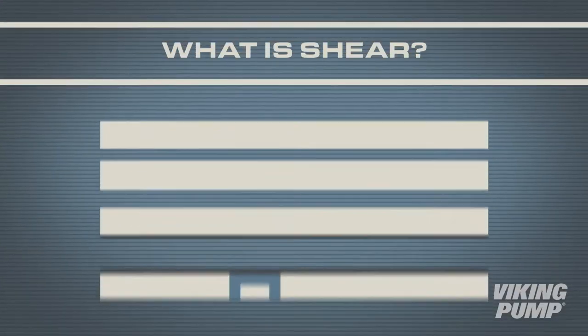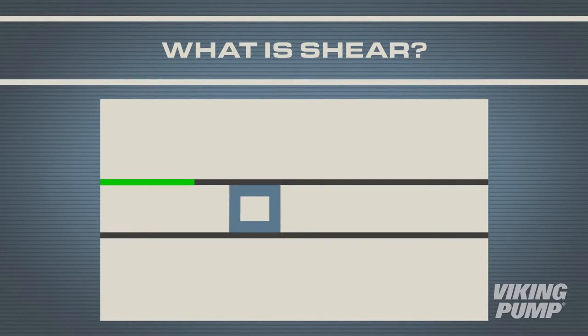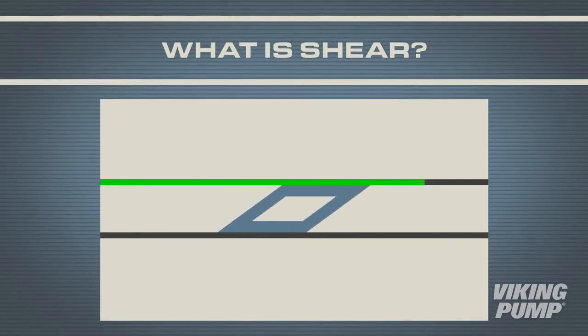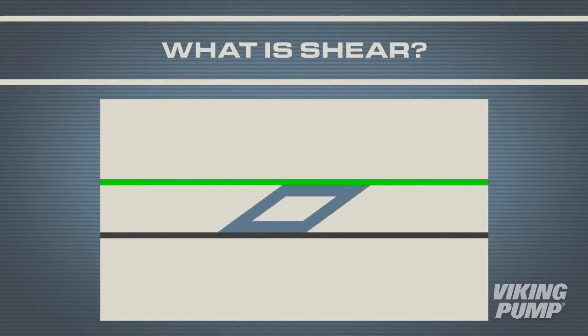Shear is relative motion between adjacent layers of a moving liquid. At rest, a liquid experiences no shear, but when put into motion, shear starts to occur. For some liquids, shear has no effect on the viscosity. These liquids are classified as Newtonian liquids. Water is a great example of this.